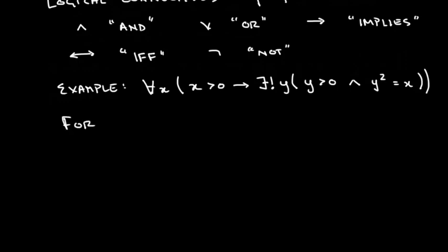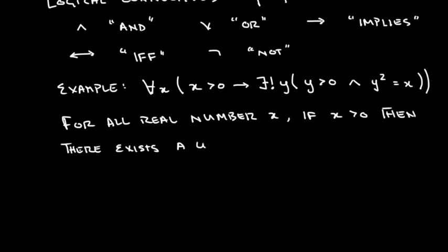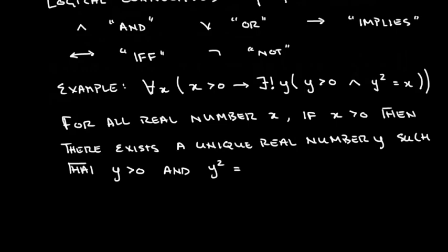So what we're saying is for all real number x, if x is greater than zero, then there exists a unique real number y such that y is greater than zero and y squared is equal to x.